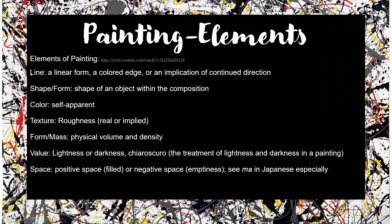The seven elements are line, shape or form, color, texture, form or mass — you could use form in either of these — value, and space. So, line: what lines do you see drawn in the painting, either actually there or implied, which we'll look at in a second. What is the shape of things — are they humanoid shaped, geometric shaped?